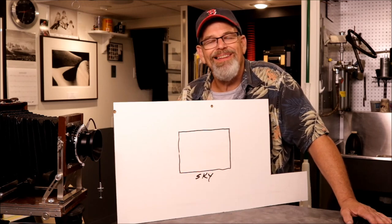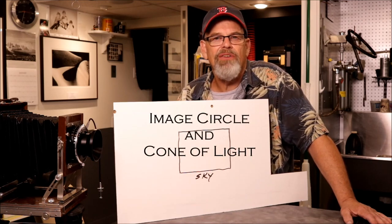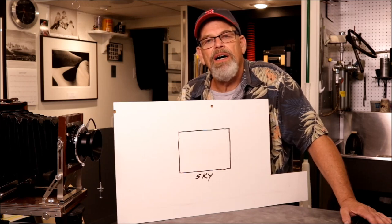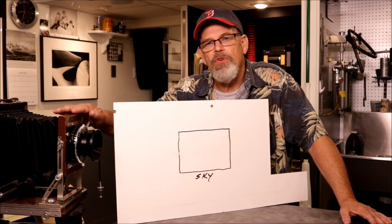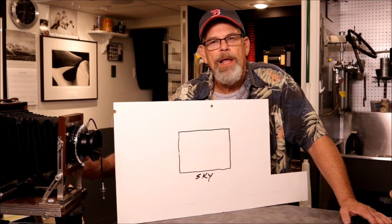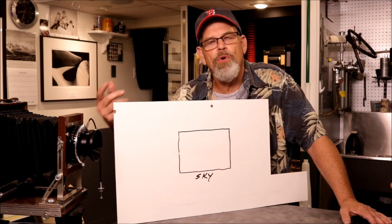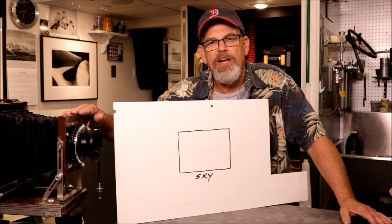What I specifically want to talk about in this segment is the actual image circle of a lens and the cone of light that it projects. I have a little homemade illustration here that I hope is going to illustrate what I'm trying to talk about. We have the camera over here where the front lens standard is zeroed out. I've talked about why, and I'm going to illustrate now why it's much more advantageous to use the rear standard than it is the front standard.